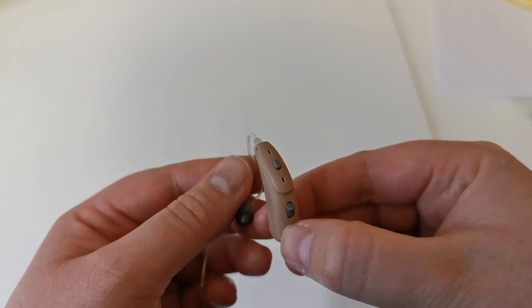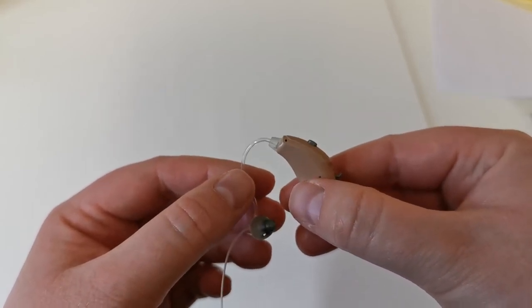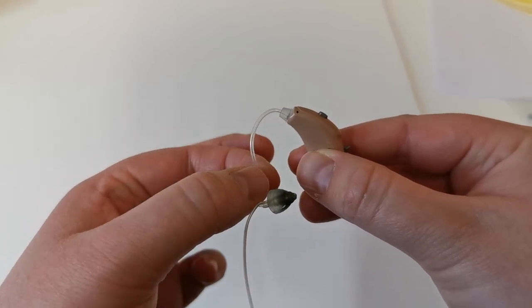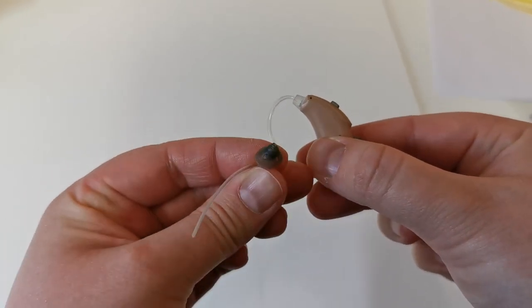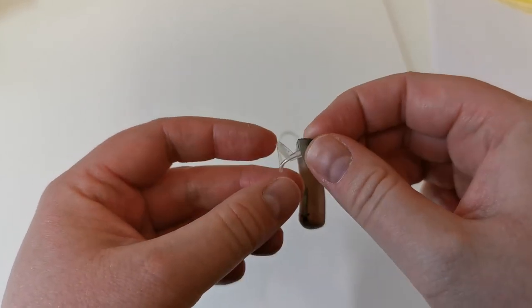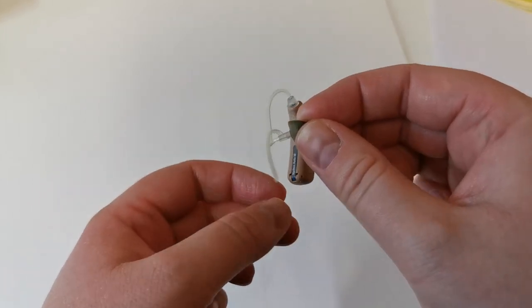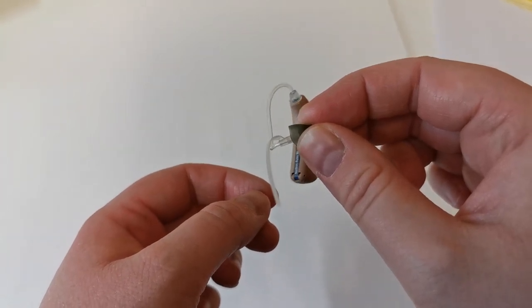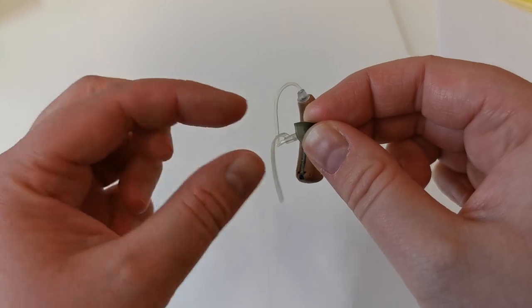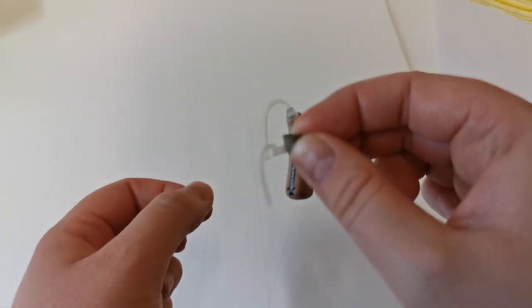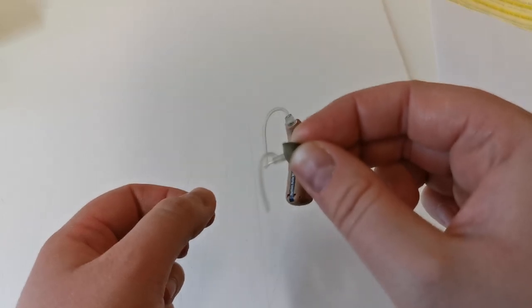The sound travels from the base part of the hearing aid through the tubing. The black dome is what goes in the ear and the plastic strip sits into the bowl of the ear. We call it the anchor. This is what your hearing aid looks like.